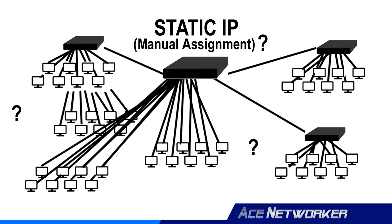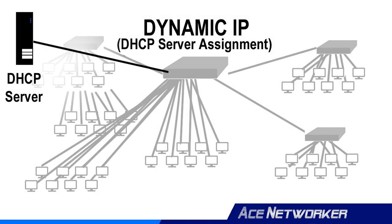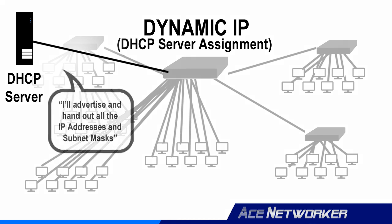Statically assigning IP addresses becomes futile on a bigger network. You also have to keep track of the IP addresses you've already used and make sure you don't assign the same IP address to two or more different devices. And what if a device you assigned an IP address to stops being used or connecting to the network? How do you know that IP address is available for another device? This is where DHCP comes in handy — it hands out and keeps track of the necessary IP addresses on a larger network. By using a DHCP server, you are using what is referred to as dynamic IP addressing.